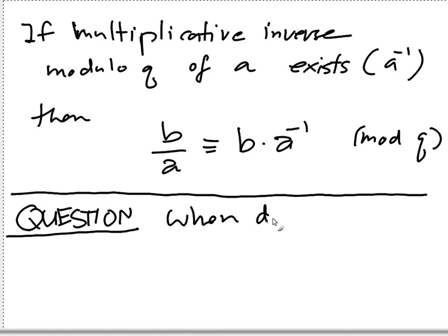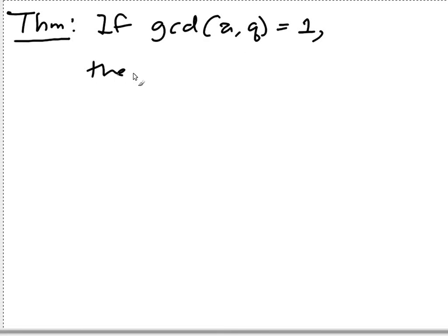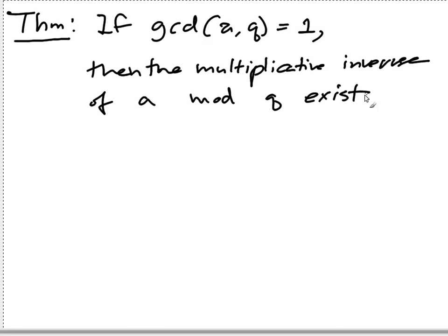So as we proved in class, we prove that in class, let me try to give you the proof again. So we prove in class that if gcd of a and q equals to 1, then the multiplicative inverse of a mod q exists.